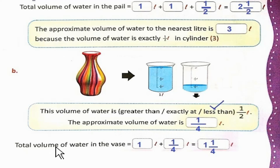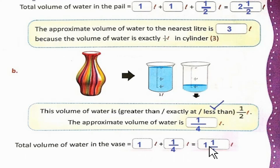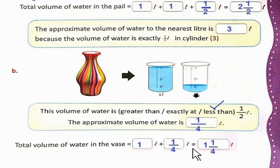Total volume of water in the vase is 1 + 1/4 = 1 and 1/4 liter. जब هم whole number اور fraction کو add کریں تو ہم انہیں directly 1 and 1/4 liter لکھ سکتے ہیں.